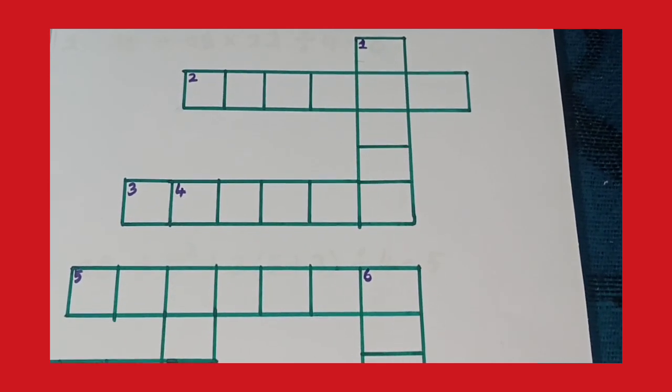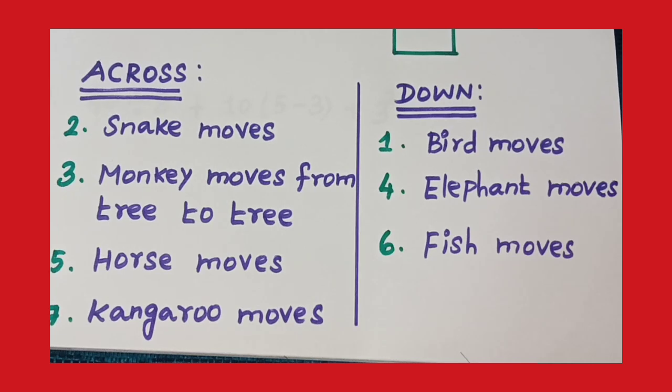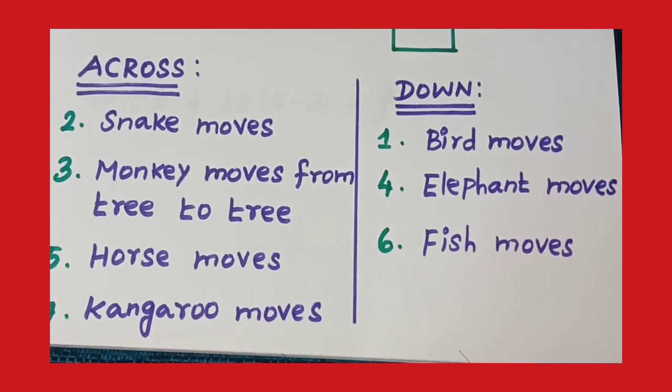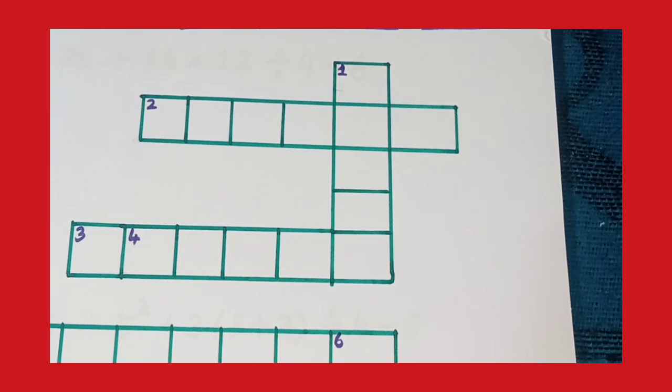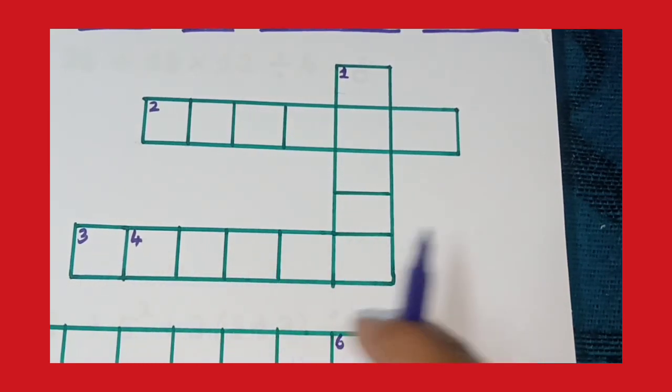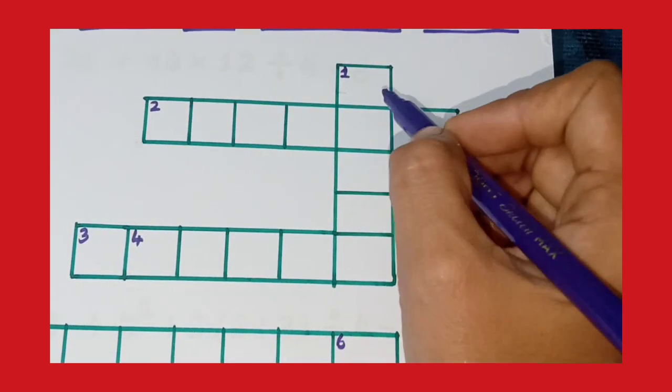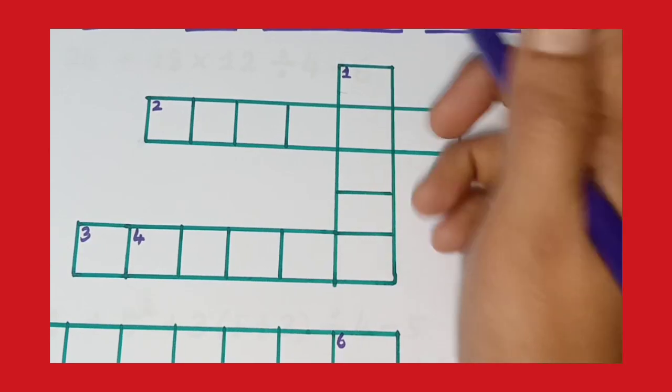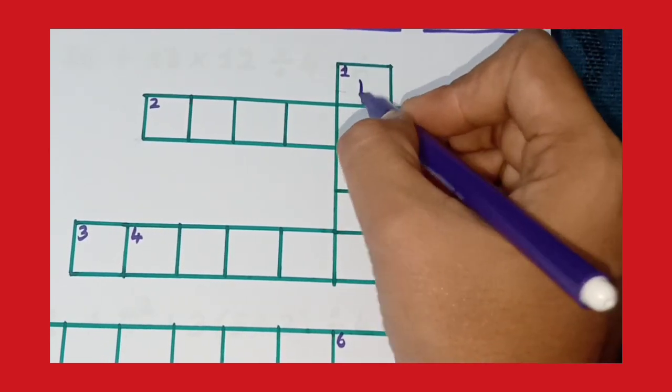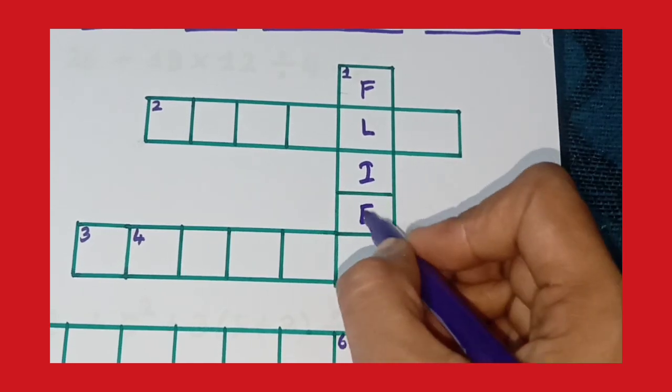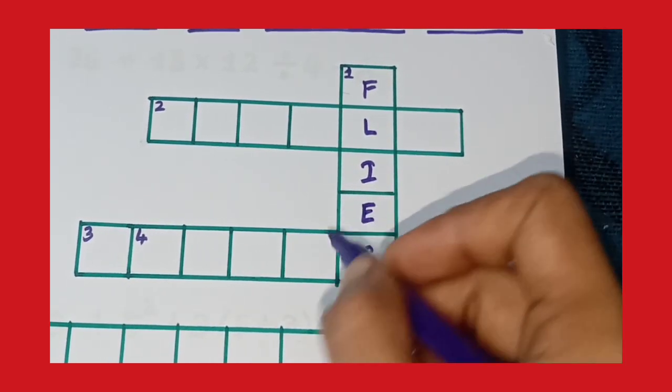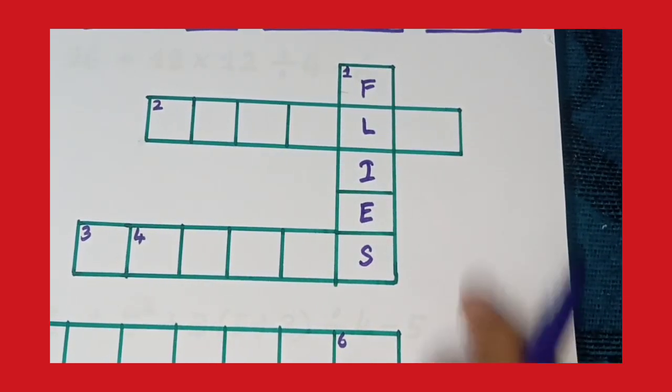First clue, bird moves. Bird moves flies. Down: F-L-I-E-S. Bird moves flies.